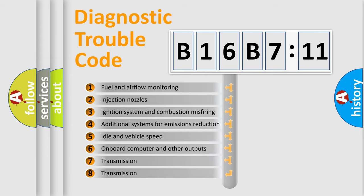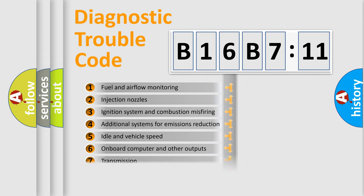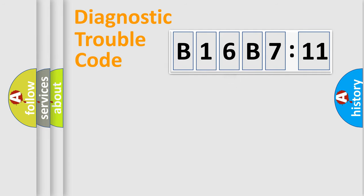The third character specifies a subset of errors. The distribution shown is valid only for the standardized DTC code. Only the last two characters define the specific fault of the group.